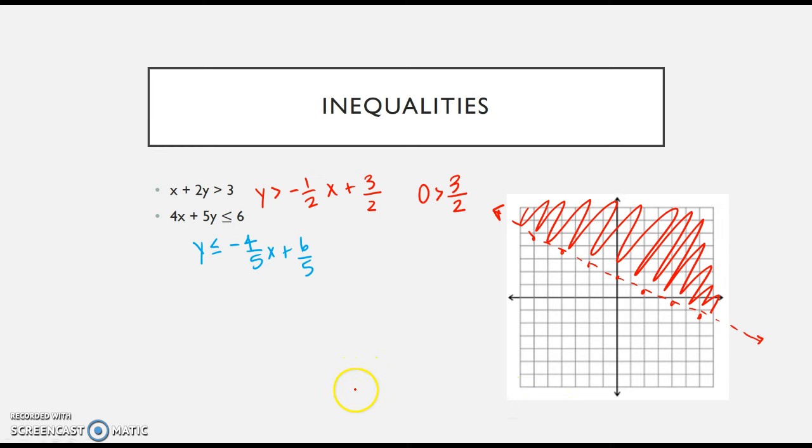I'll do the same thing for this one. I go to 1 and 1/5, put my dot, then go down 4 over 5 and up 4 left 5. This one is or equal to, so I'm going to have a solid line to connect all of these.